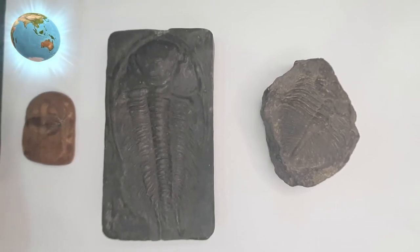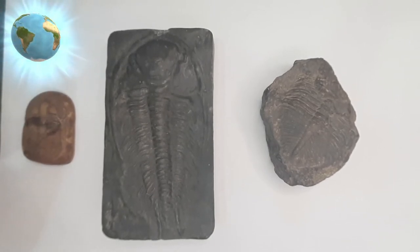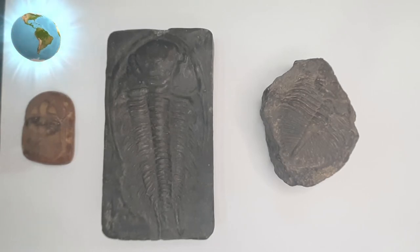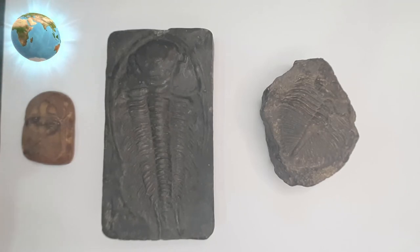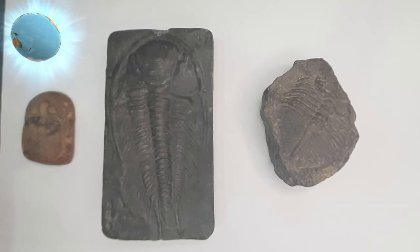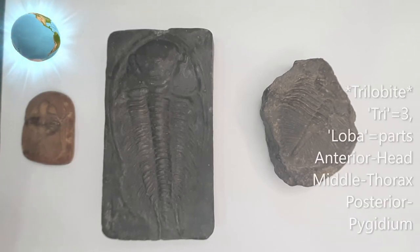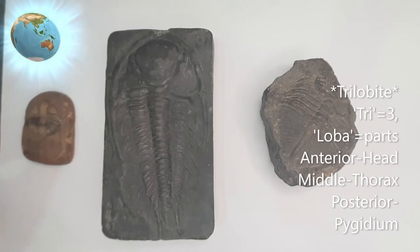Animals belonging to Class Trilobites are now extinct. They lived in the early Cambrian period — the beginning of Cambrian. They were supposed to be the first animals in fossil form that appeared. We can refer to these animals by studying the fossils. They were ruling in the early Cambrian period.